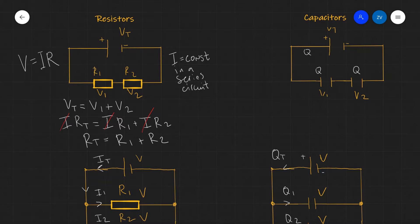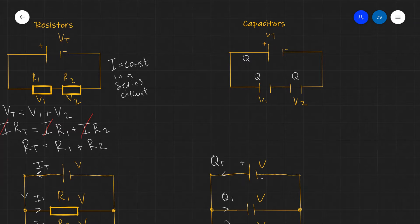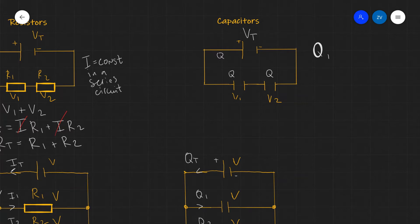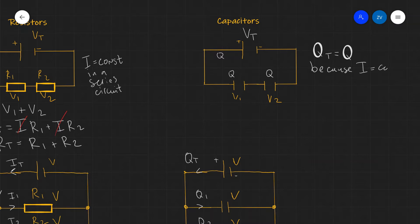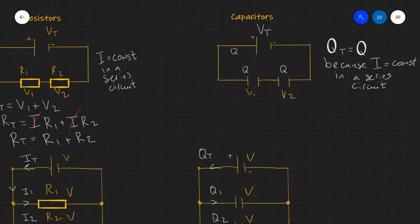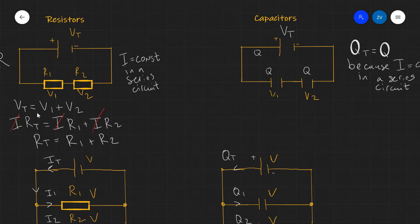Now let's look at a capacitor series circuit. Once again, we have an EMF across the cell — I'll call this V total. Because the current charging those capacitors is constant in a series circuit, the total charge flowing through will equal the charge across each capacitor. Kirchhoff's second law applies the same way regardless of whether the components are bulbs, resistors, or capacitors — the laws of physics are very similar.